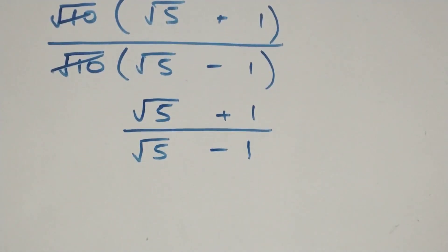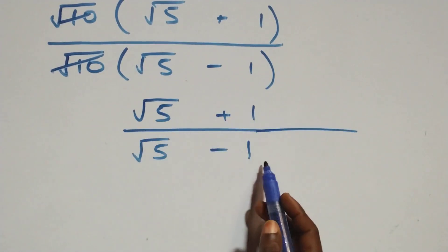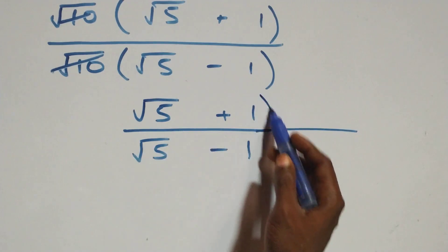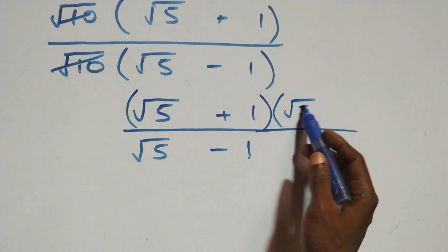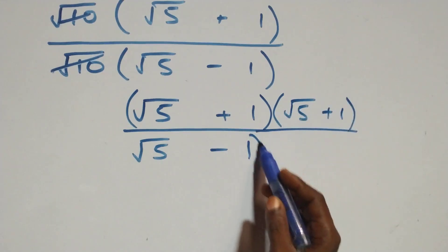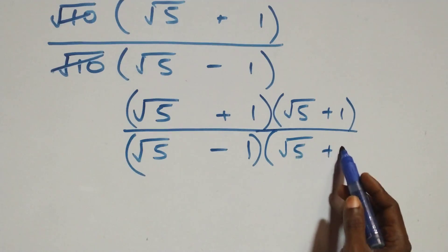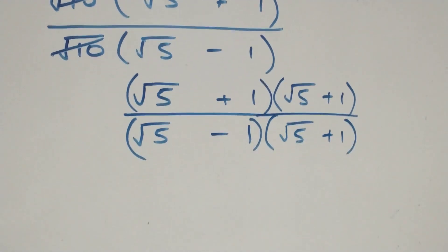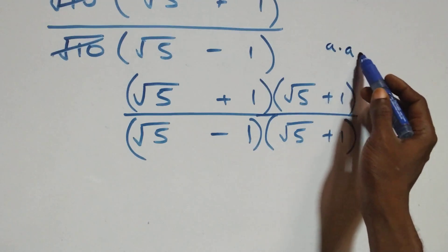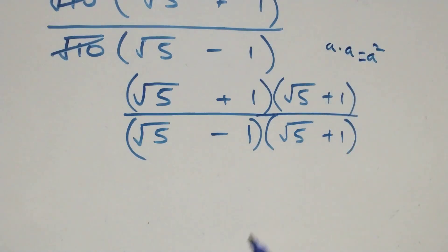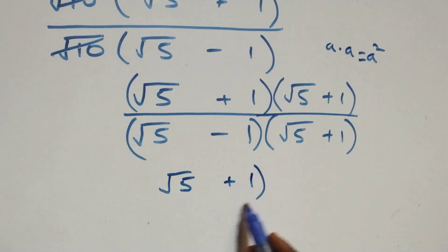Next, we rationalize this expression by multiplying both the numerator and denominator by the conjugate of the denominator. The conjugate of (√5 − 1) is (√5 + 1), so we multiply by (√5 + 1)/(√5 + 1). The numerator becomes (√5 + 1)², since we have the same thing multiplied — like a × a = a².